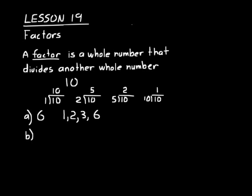Find the factors of 3. That would just be 1 and 3 — those are the only two ways you can get 3 by multiplying two whole numbers. Now for 16: 1 always works, and whatever that number is itself. So 16 works. 2, 4, and 8 would also work. 1 times 16, 2 times 8, 4 times 4 — all of those are factors of 16.